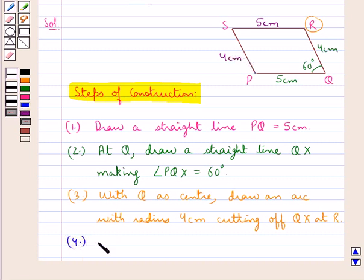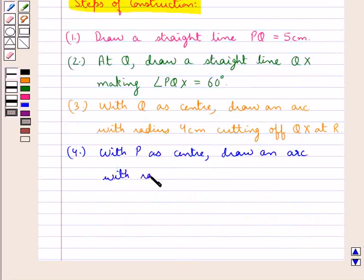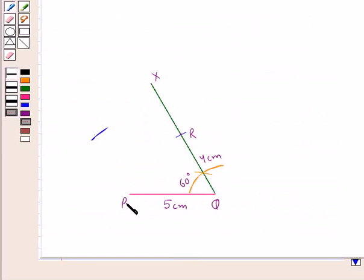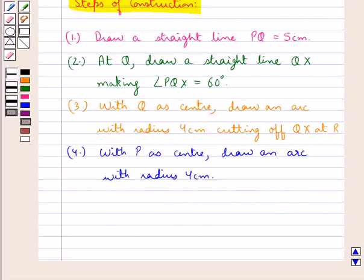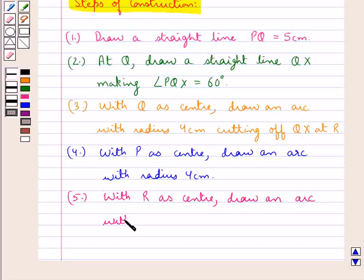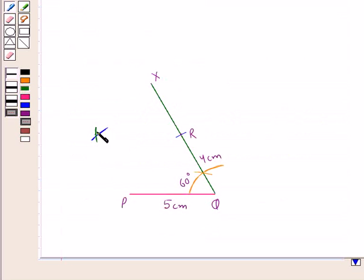With P as center draw an arc with radius 4 cm. With R as center draw an arc with radius 5 cm. This green arc is the arc that we have drawn taking R as the center and radius equal to 5 cm.